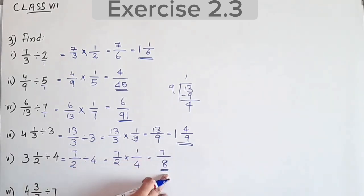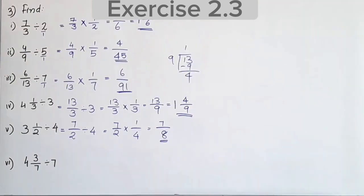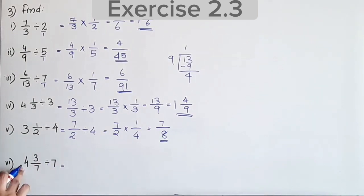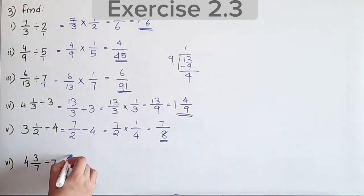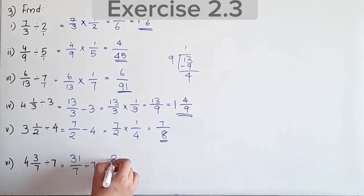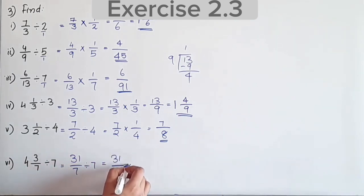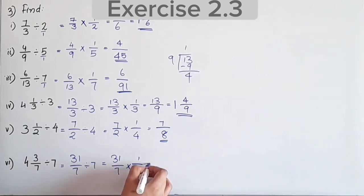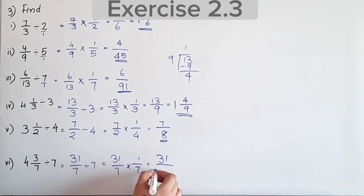Next question: 4 3/7 divided by 7. Convert: 7 into 4 is 28, plus 3 is 31, so 31/7. Divided by 7 equals 31/7 into reciprocal of 7, which is 1/7. Equal to 31 by 49.